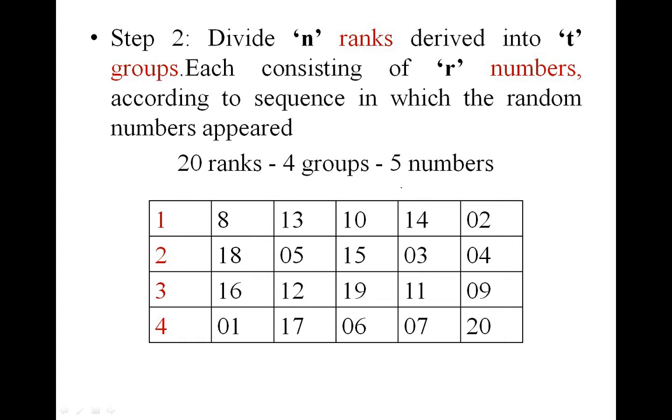In step two, we divide these ranks into T number of groups. Here we have divided the 20 ranks into four groups, each consisting of five numbers.